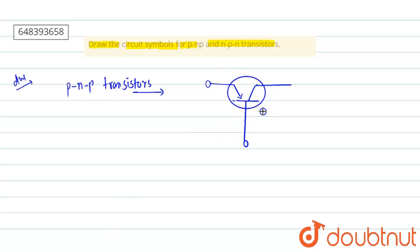Here it is called collector, which is of P type, and this is called emitter, which is of P type.